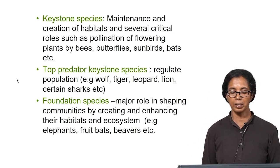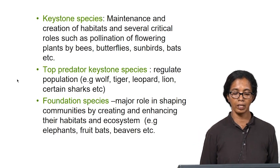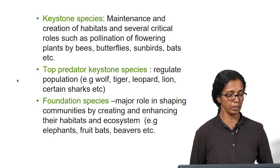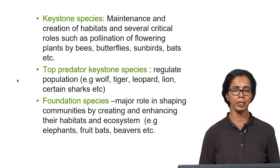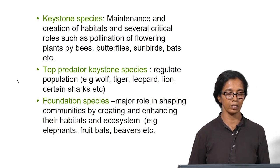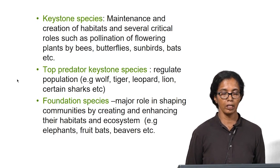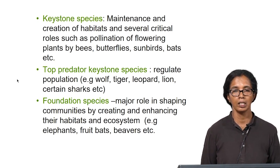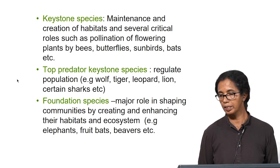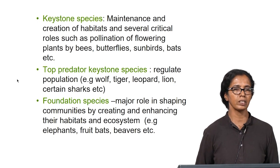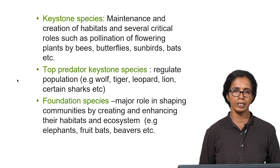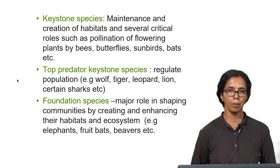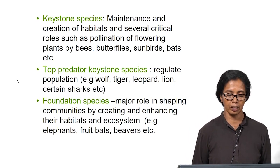There are also top predator keystone species — examples are wolves, tigers, leopards, and certain sharks. They are at the top of the food chain and their important role is regulating the population of different species they feed upon. The health of a forest ecosystem is dictated by tigers, leopards, or lions, which is important for reducing the number of herbivore species. Without predators, herbivores could increase in number and feed upon all plants, potentially causing the system to collapse. Top predator keystone species are required for controlling herbivore populations and other links in the food web below.